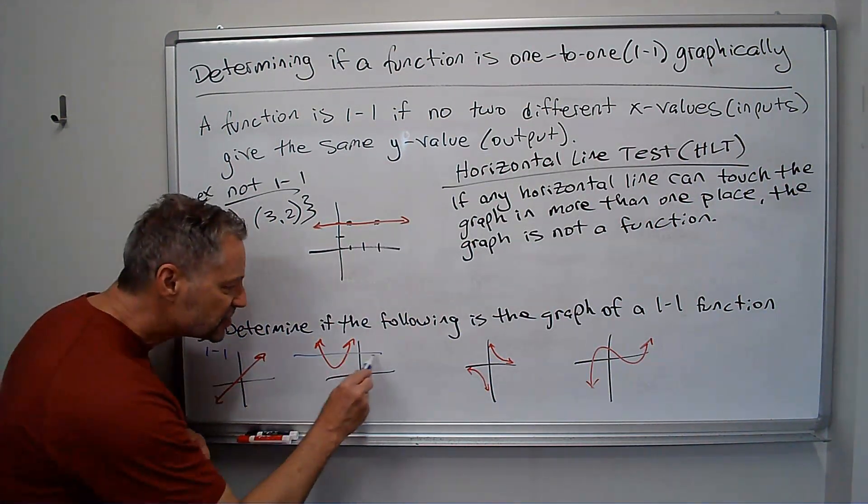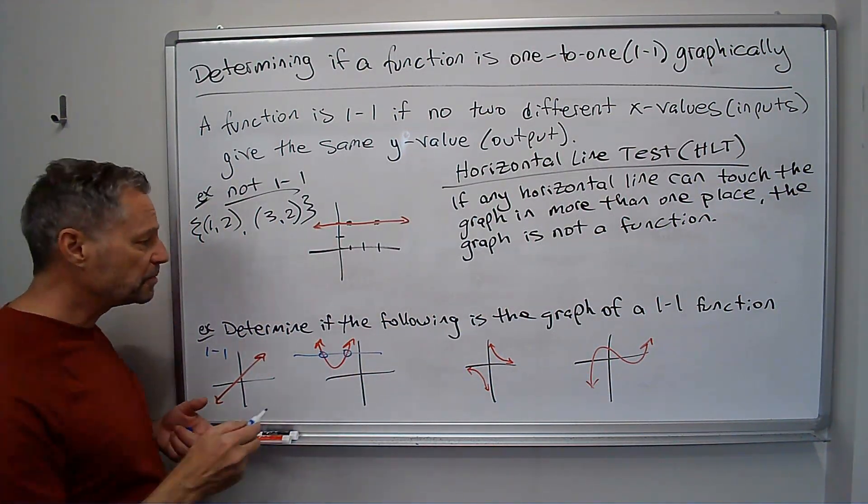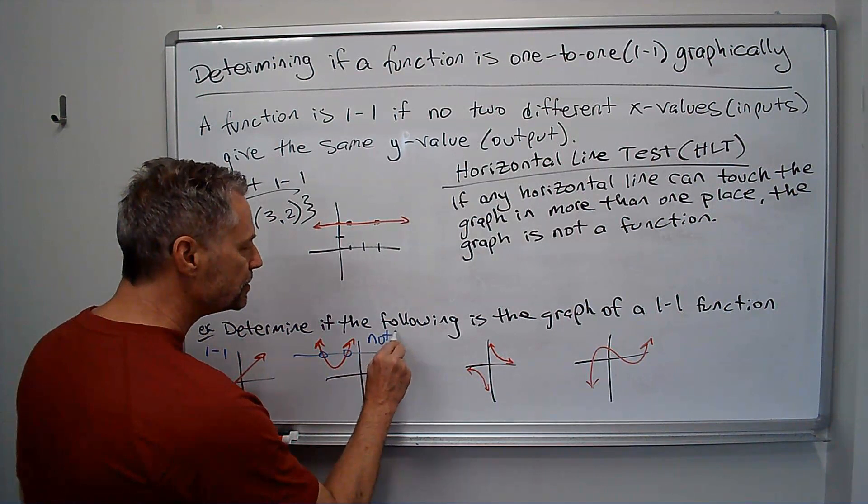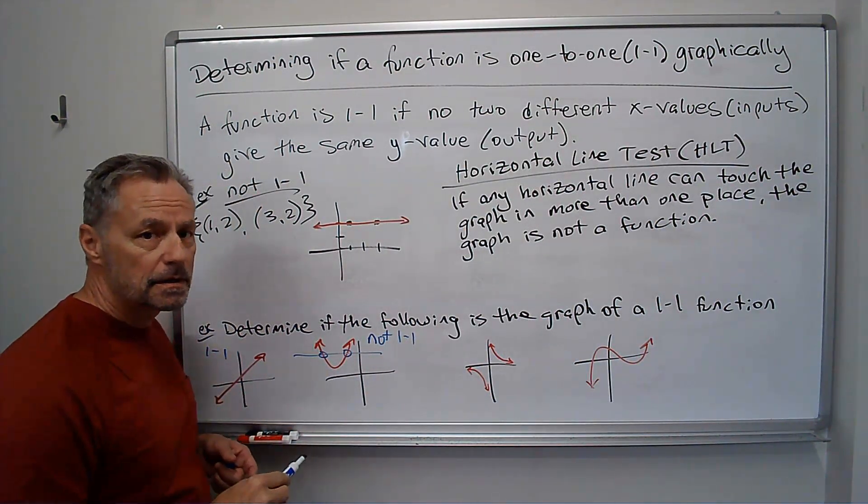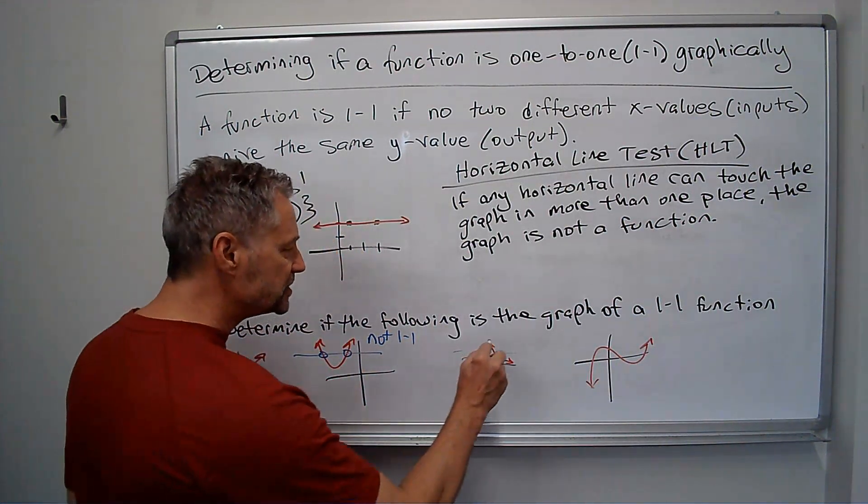But on this graph, I can draw a line—oh, that horizontal line crossed it more than one place. This one's not one-to-one. Again, any horizontal line is only going to touch it once. This one is one-to-one.